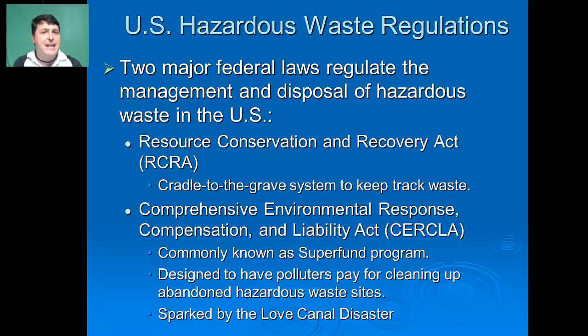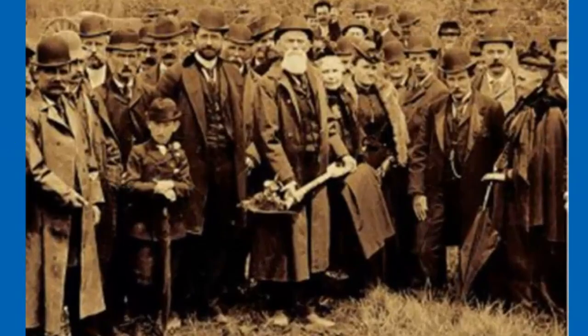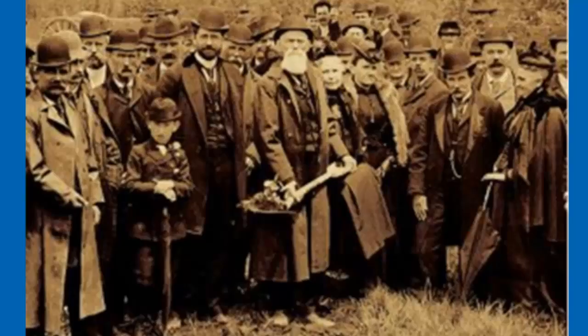The Love Canal gets its name from its original creator, William T. Love. William Love was interested in diverting water from the Niagara River to Lake Ontario to produce hydroelectric power for growing industries in the area. Unfortunately, as a result of the development of AC power, which allowed for the movement of electricity over long distances, and a congressional ban on the removal of water from the Niagara River, his plan fell through.